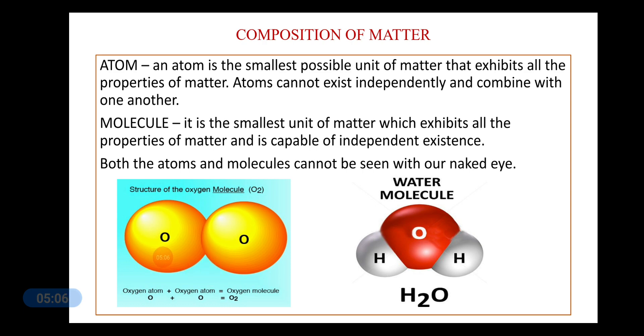So, one oxygen atom plus another oxygen atom will form O2, that is, a molecule of oxygen. So, what is a molecule? It is also the smallest unit of matter, which can exhibit all the properties of matter. And, it is capable of independent existence. This is the main difference between an atom and a molecule. Because, an atom cannot exist independently, but a molecule can exist independently. But, both these atoms and molecules cannot be seen with our naked eye.